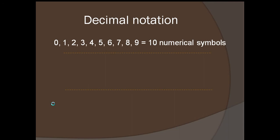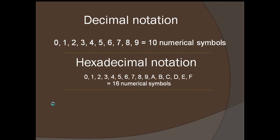In decimal notation, you use 10 numerical symbols from 0 to 9. In hexadecimal notation, you use 16 symbols: 0 to 9 plus the letters A, B, C, D, E, and F. For example, the number 457 in decimal is 1C9 in hexadecimal.